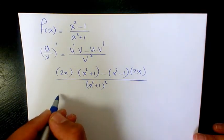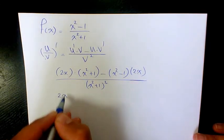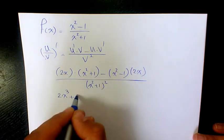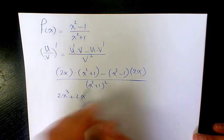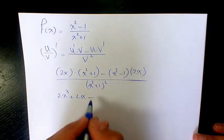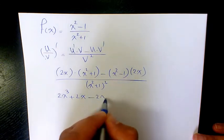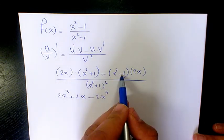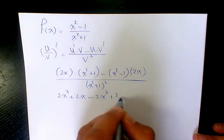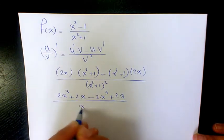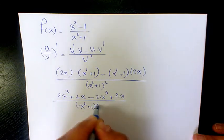Then, 2x times x squared is going to be 2x cubed. 2x times 1 is 2x. Minus x squared times 2x is going to be 2x cubed. And negative times negative 1 is positive, times 2x is going to be positive 2x.